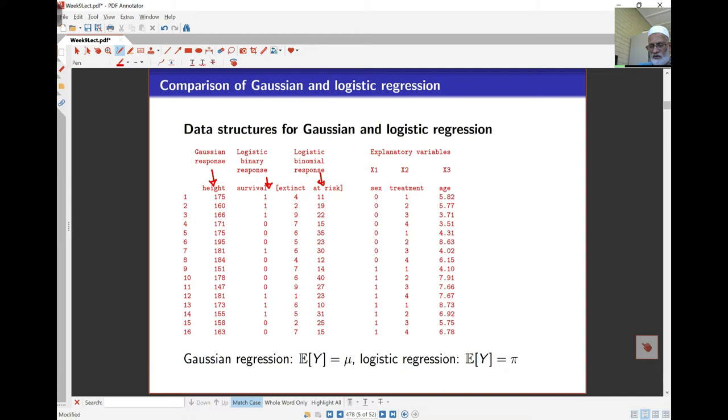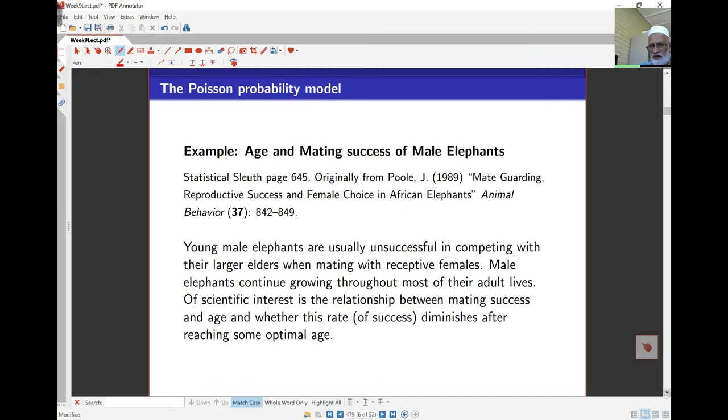The example we'll take a look at here is from the textbook, where what we're looking at again is something from a paper. Young male elephants are usually unsuccessful in competing against their older companions in mating with females. And male adults actually continue to grow throughout most of their adult lives. And the interest here is in whether there is a relationship between mating success and the age of the elephant. This is important for maintaining elephant populations. If the young elephant males can't mate so much, we're required to have more of the older males in the population. And also the question of interest is whether this rate of success diminishes after some age, or does it carry on in the older age.